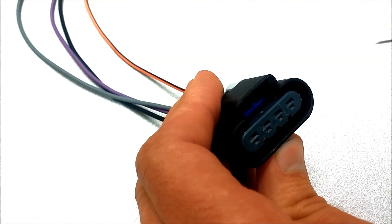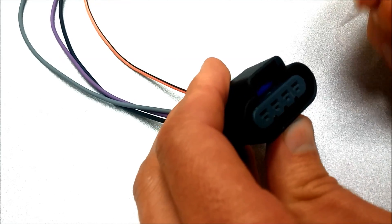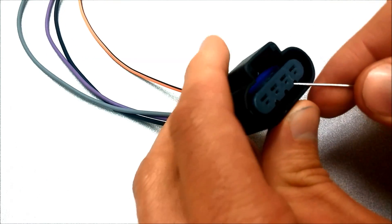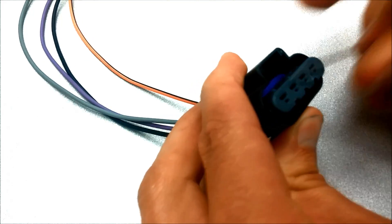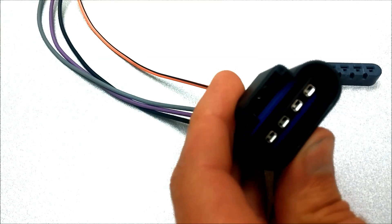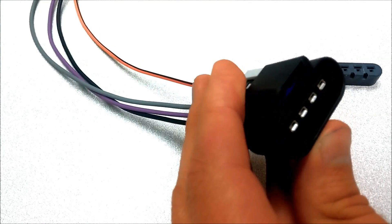So on this connector, you can use a screwdriver for this first part if you want to, or the T-pin might work. We've got to just remove this plastic piece, and once I take that off, I can see the four terminals in there.